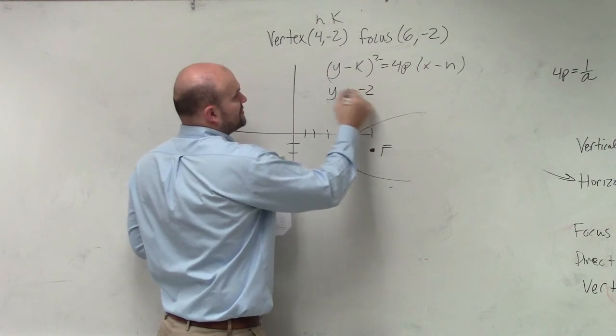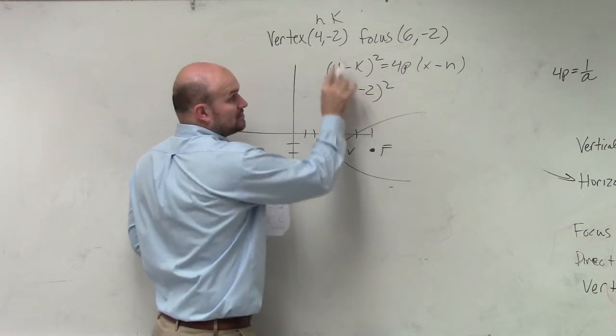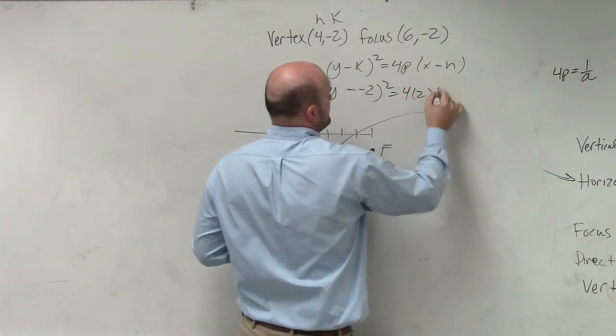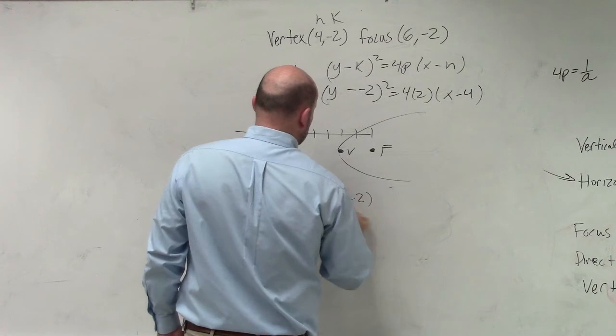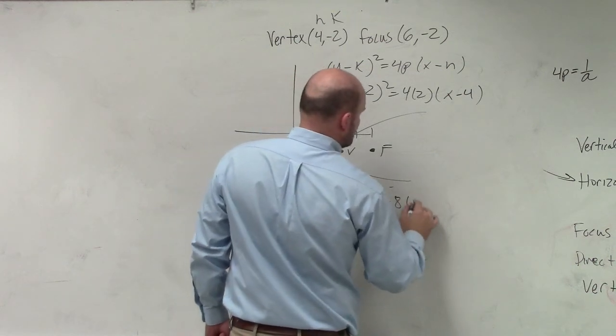Y minus negative 2, make sure y is always with k, equals 4 times 2 times x minus 4. Simplify: y plus 2 squared equals 8 times x minus 4.